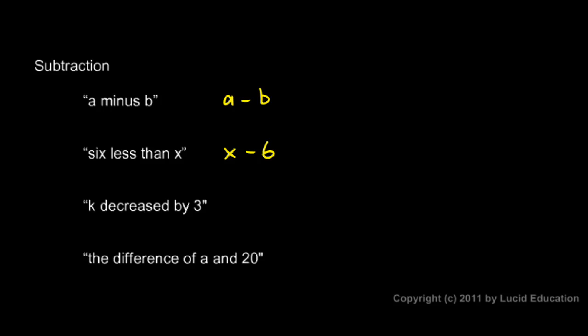k decreased by three. That's pretty straightforward. k, and then we subtract three. That's k decreased by three.